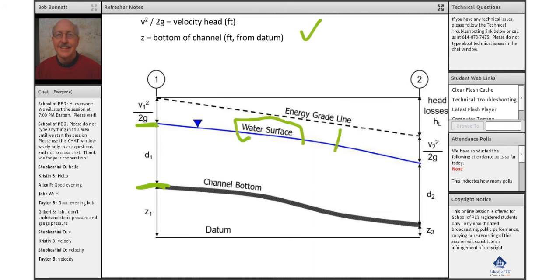Of course that takes us right up to the water surface. So the hydraulic grade line would be and is the water surface of an open channel, the HGL.